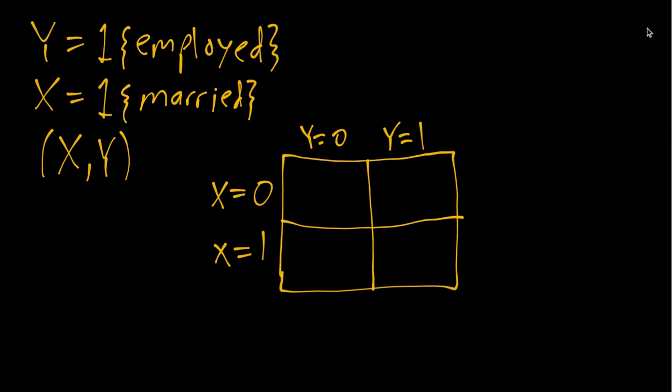So there's four possibilities. Either somebody is not employed and not married—that's this box on the top left—they are not employed and married down here, or they are employed not married here, or both employed and married here.